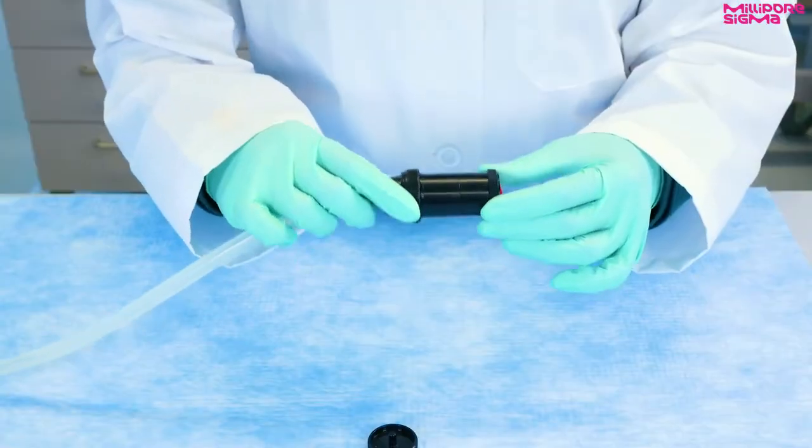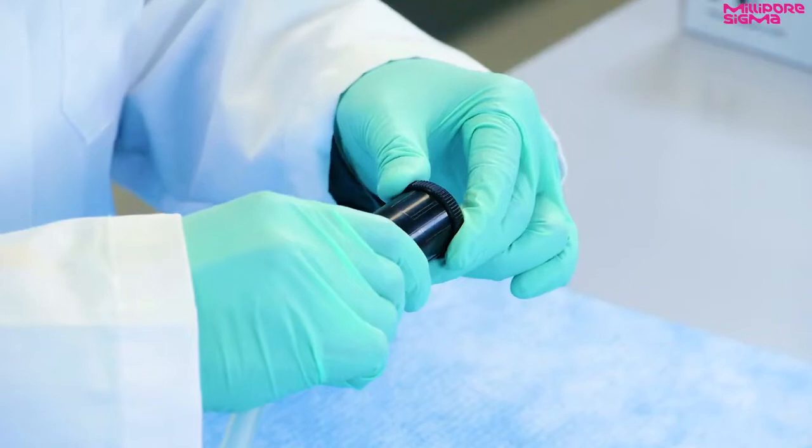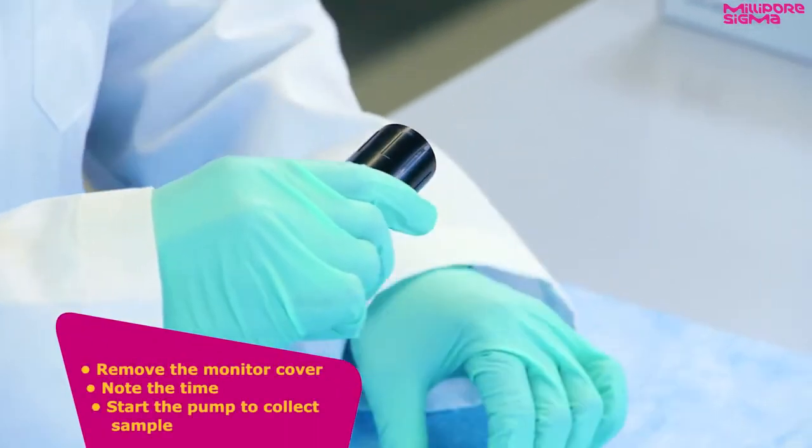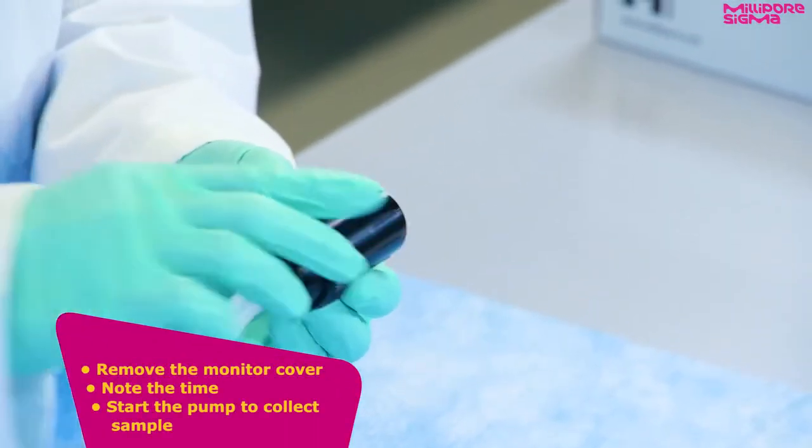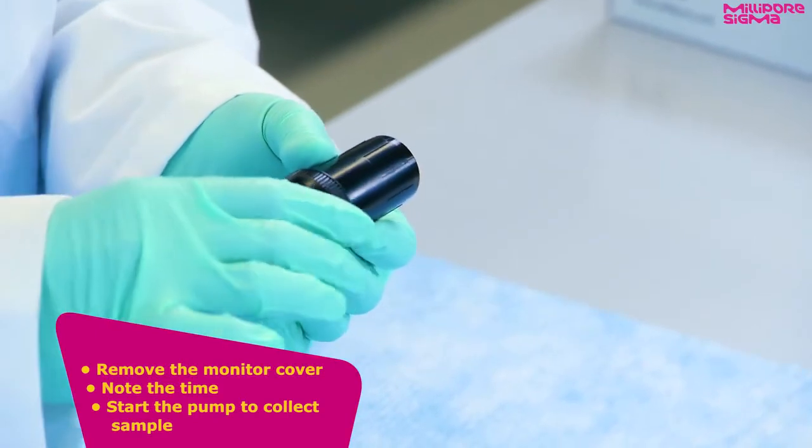To start sampling, position the monitor where the sample is to be collected. Remove the monitor cover, note the time, and start the pump to collect the sample for the specified time required in the method.